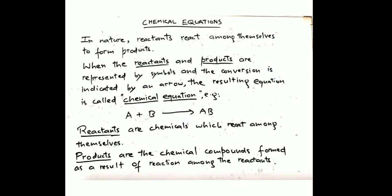For example, A plus B gives AB. A and B are two elements and the compound will be AB. AB is the product and A and B are the reactants. If we show this chemical reaction symbolically, we call it a chemical equation. Essentially, chemical equation and chemical reaction are one thing. A chemical equation is a pictorial and symbolic representation of a chemical reaction.